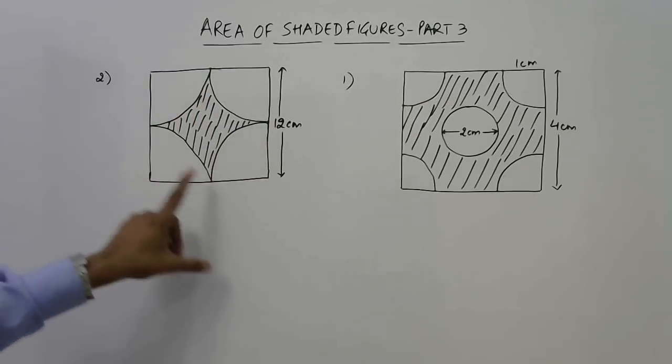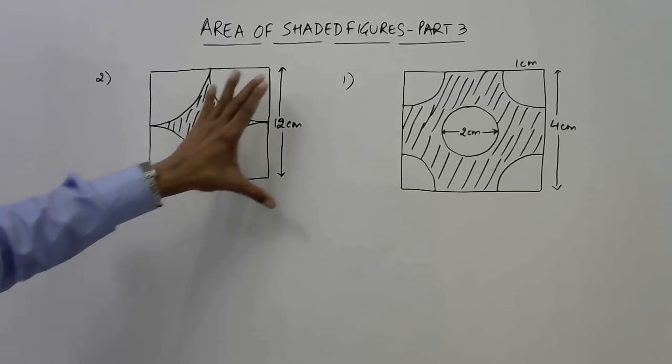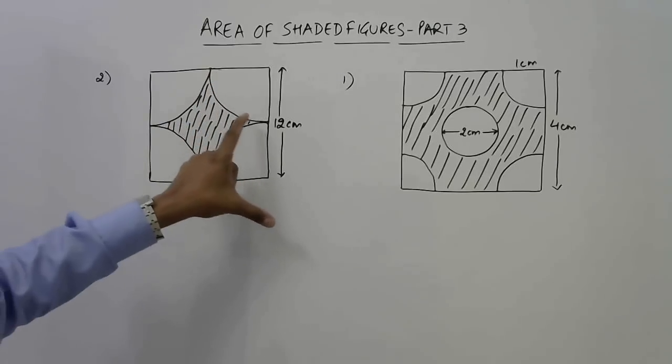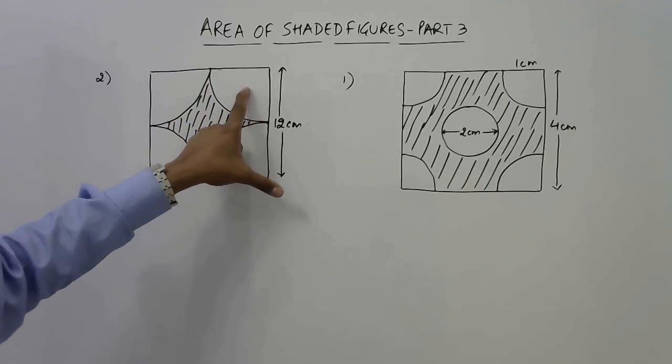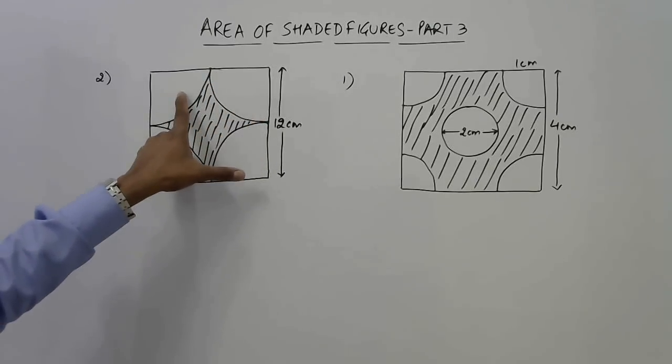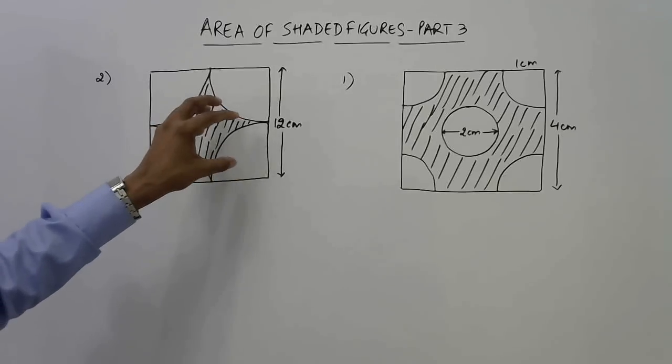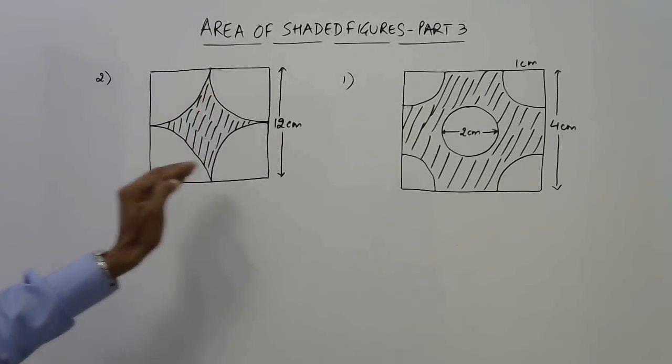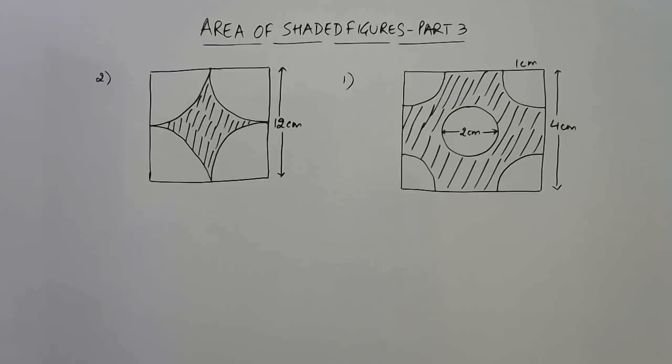Similarly, we have a square here in the second question. These four points are the midpoints of the square's sides. The side of the square is 12. We have joined the midpoints in such a way that these are quadrants - one, two, three, and four. We need to find the area of the square which is not included in the four quadrants.